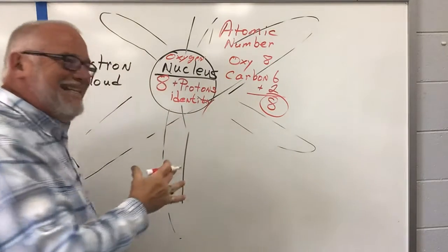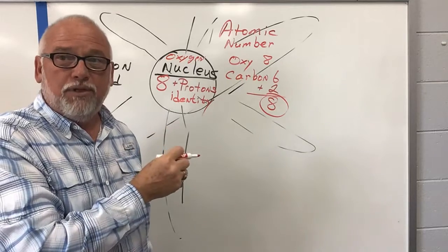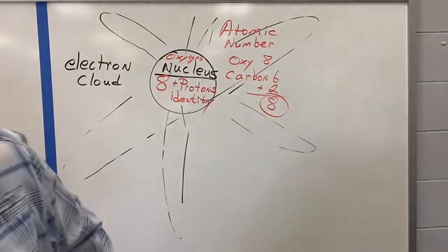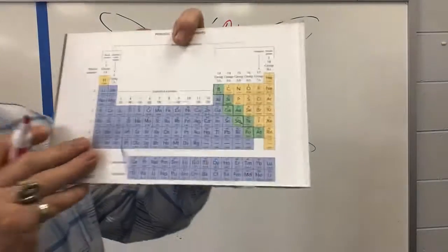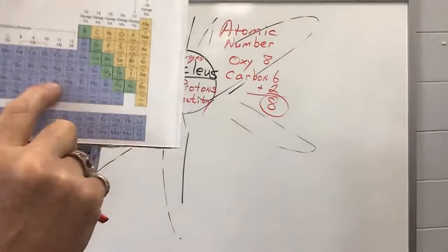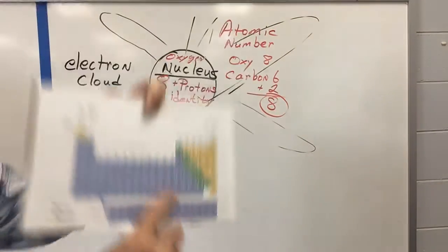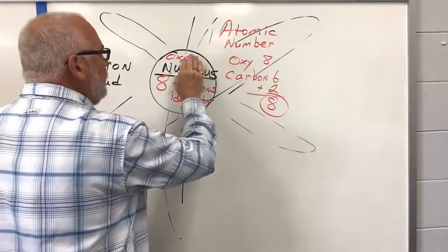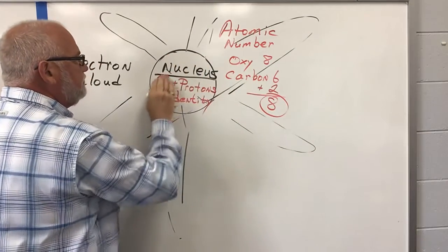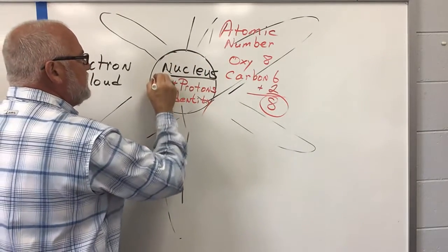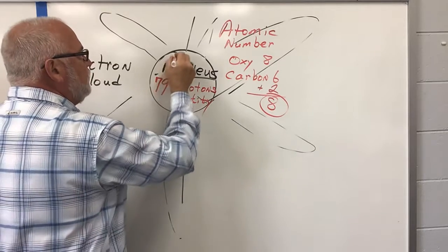The identity is based on the number of protons. So, gold, its identity, AU, its identity is 79. So, let's change this to gold. Let me show you how I'm going to do it. 79. Ta-da! We now have gold.